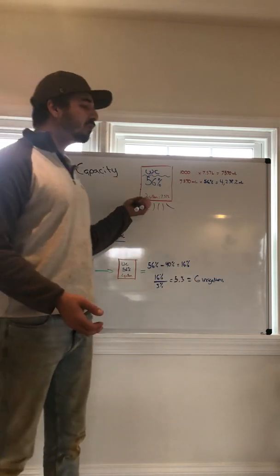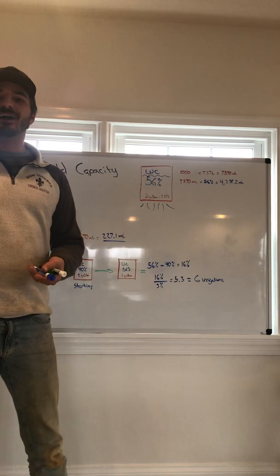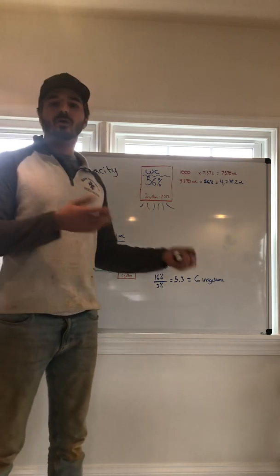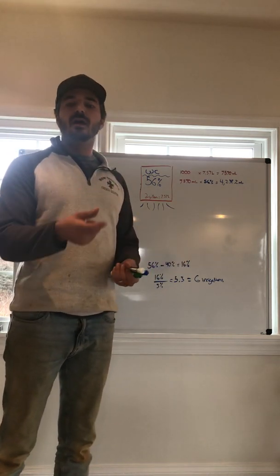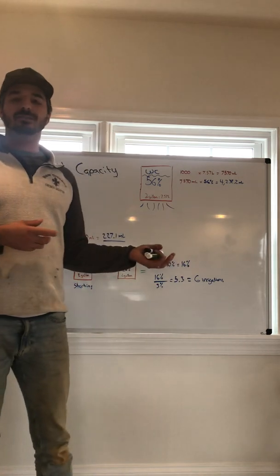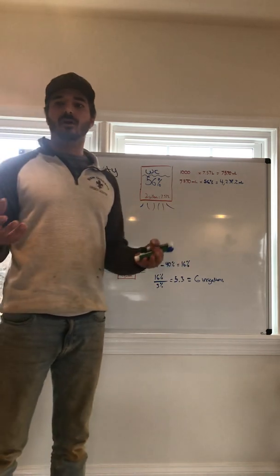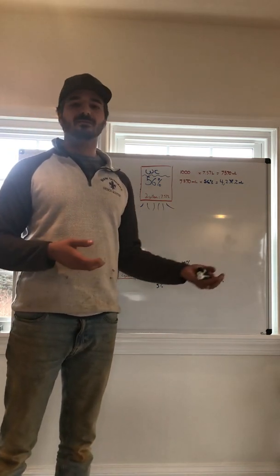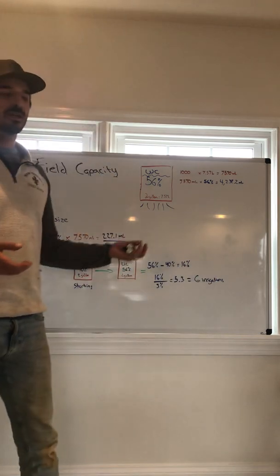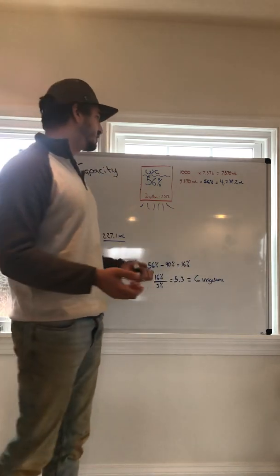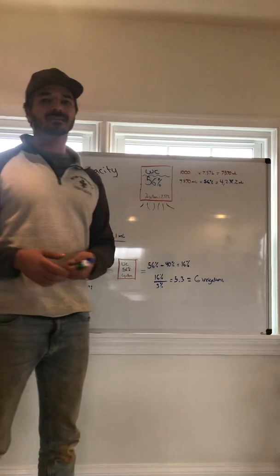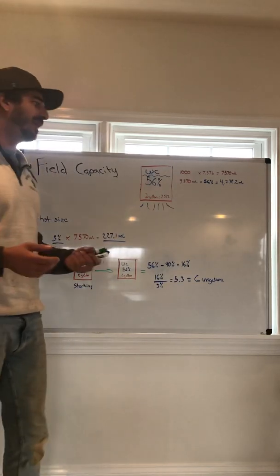Most coco is between 40 and 55 percent. Some coco, if they have more pith in it, then you're going to have a higher field capacity. I've seen some blocks that are all pure pith have 65, 70 percent versus like maybe Rio coco or Dutch plantain having a field capacity of about 56 percent, 55 percent.